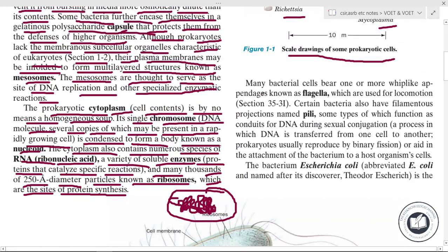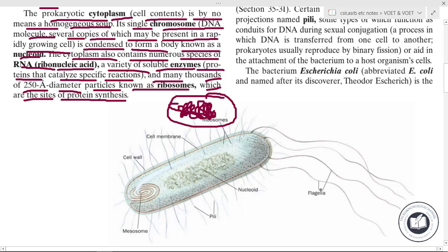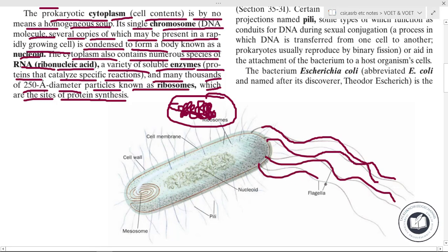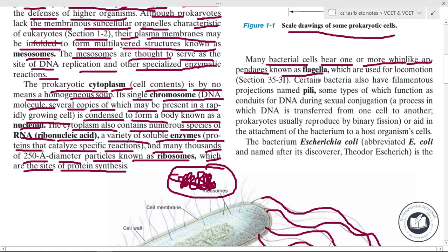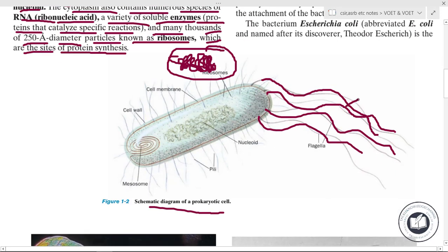Many bacterial cells bear one or more whip-like appendages known as flagella. These flagella are located outside the cell and are used for locomotion by the bacteria.